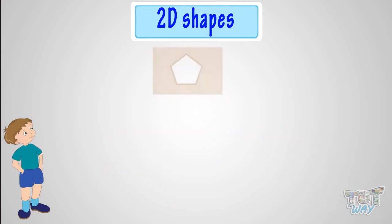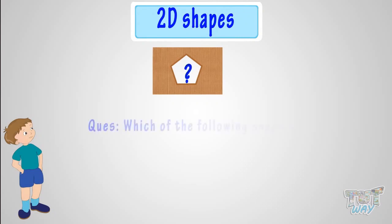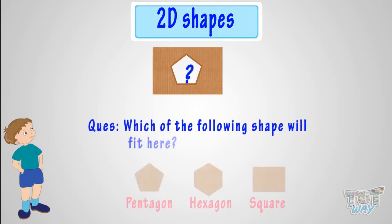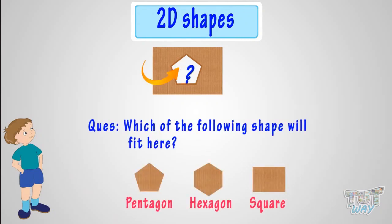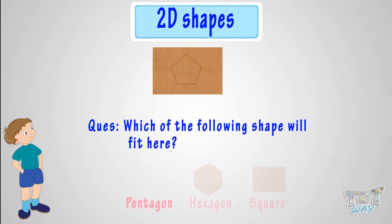Here is a shape cut out from cardboard. Which of the following shapes will fit here? A pentagon shape will fit here as it has five sides.